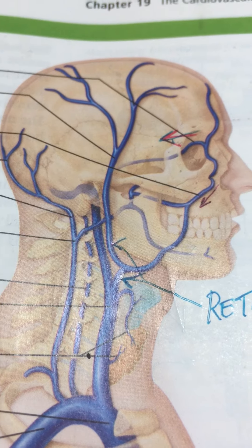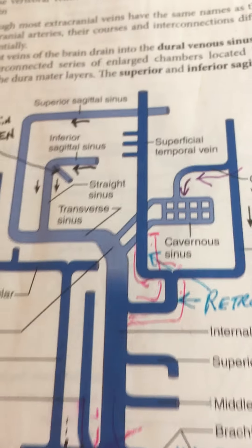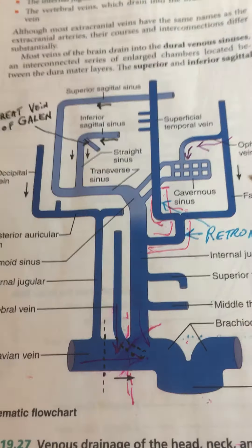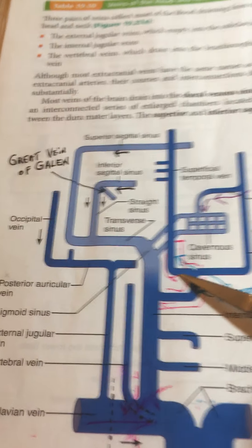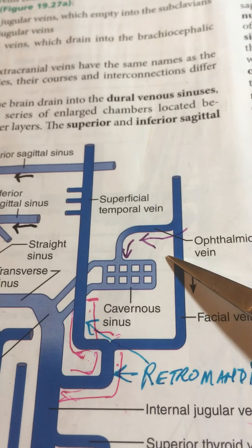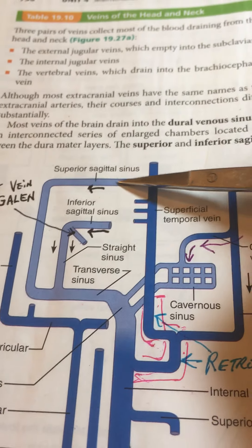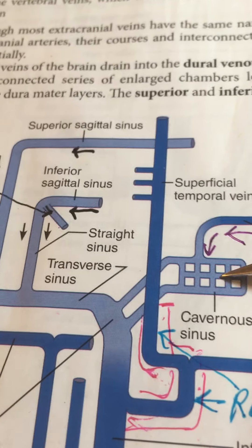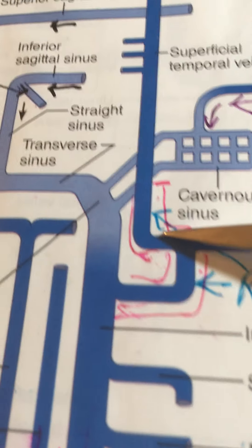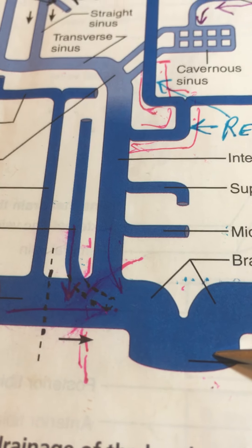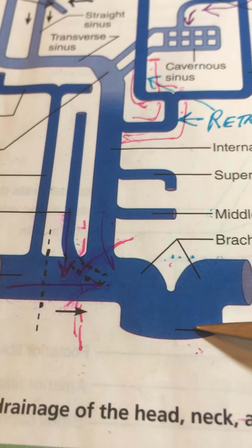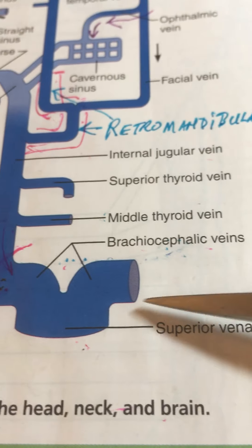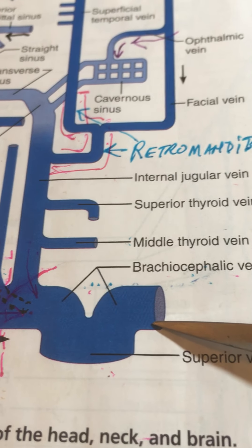Let's go to page 738, where there is a schematic diagram. Going on here we have a cavernous sinus, a superior sagittal sinus, and an inferior sagittal sinus — all structures inside the skull. I want to take a close look at the return to the heart and orient us to the superior vena cava, which is fed by three tributaries.